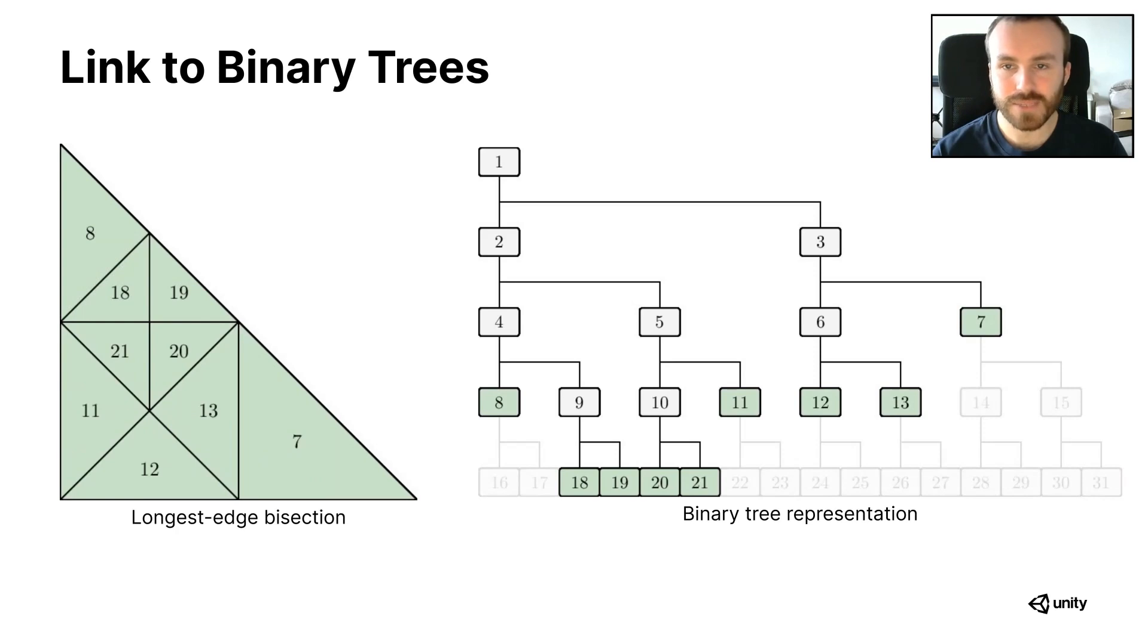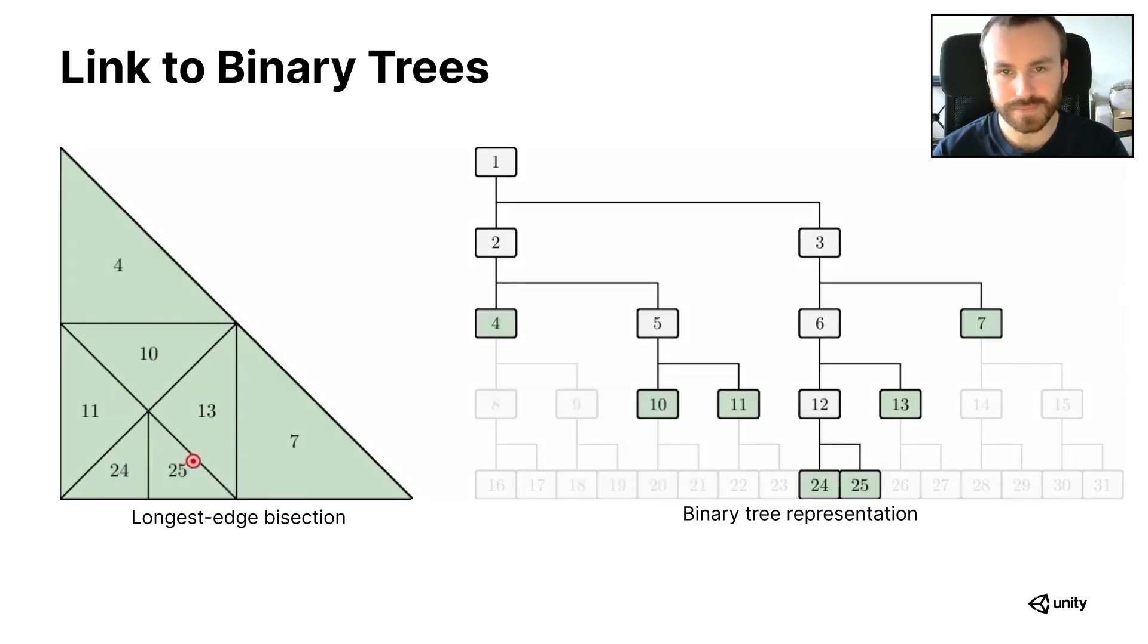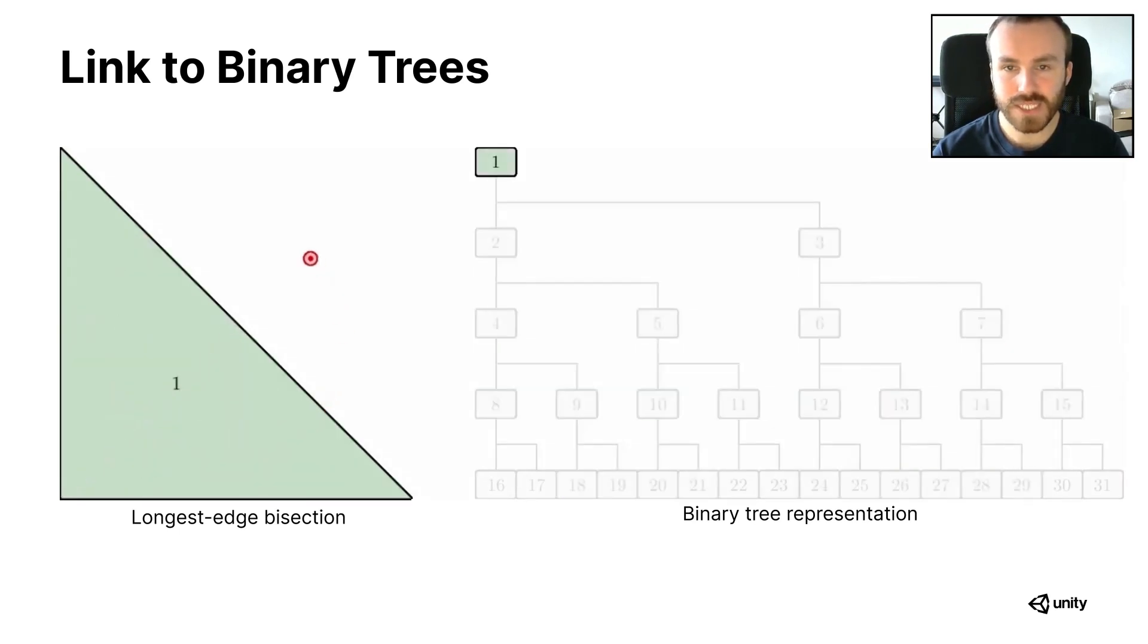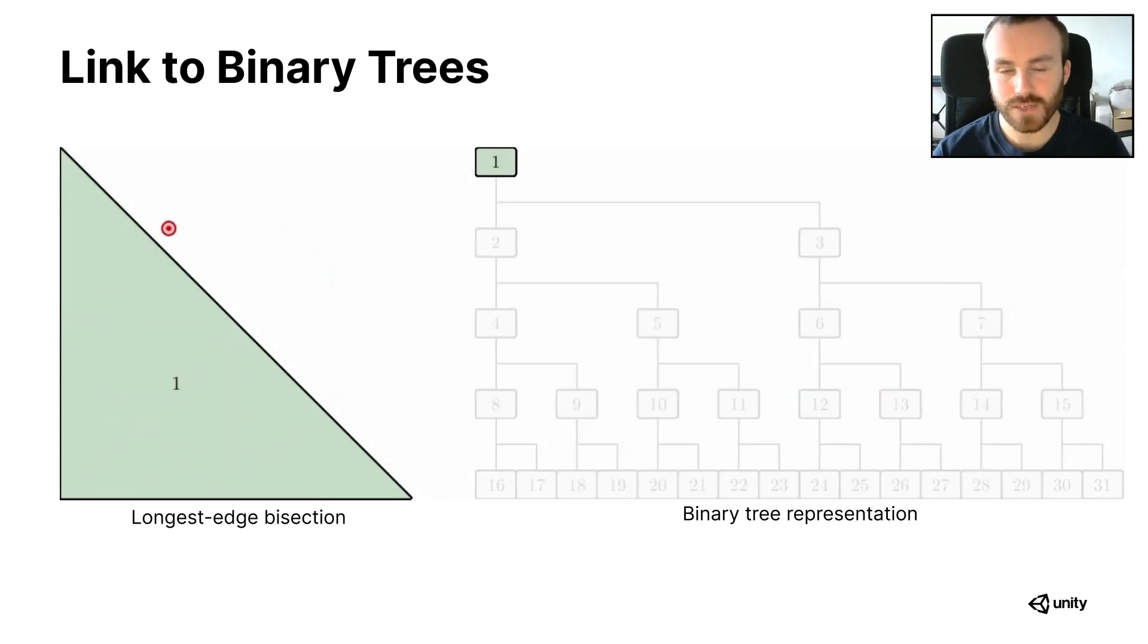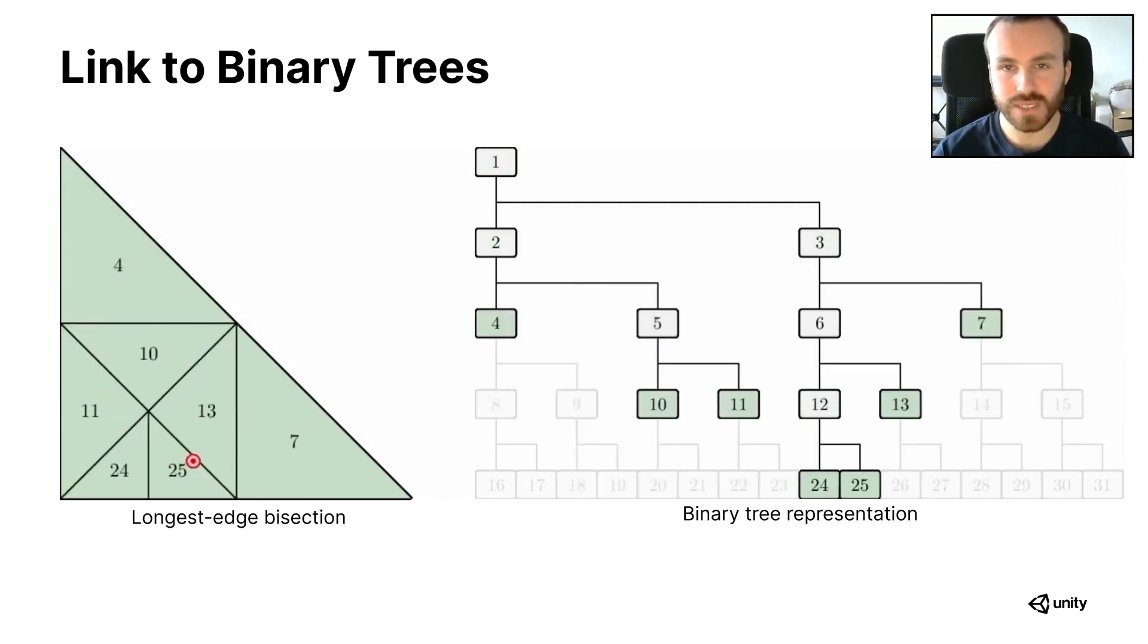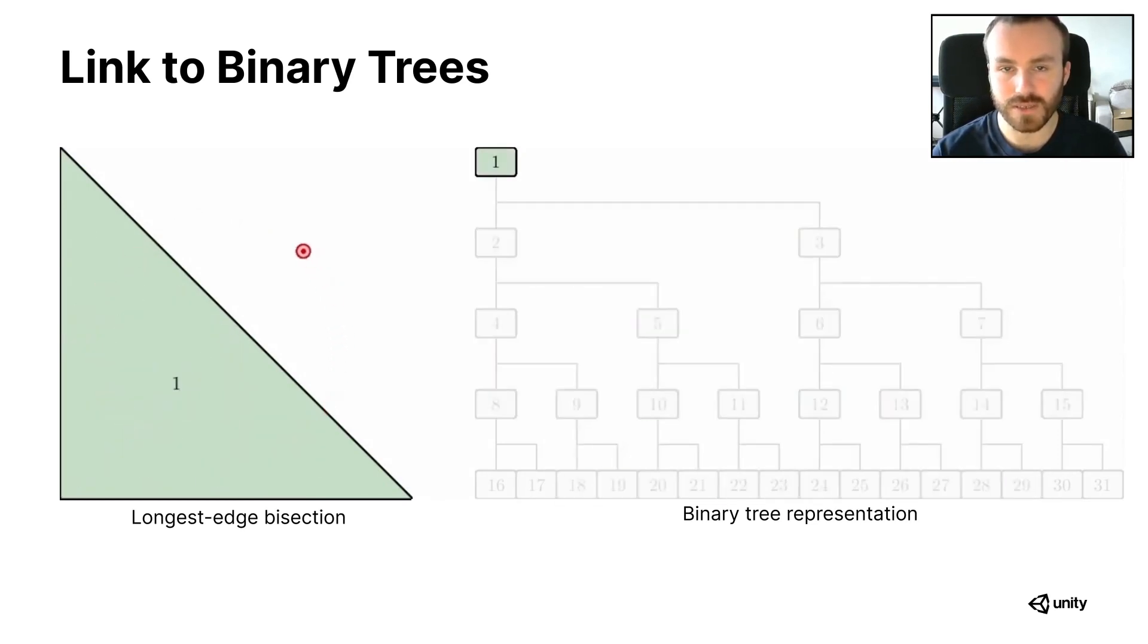This is also true in the case of an adaptive subdivision, where the smaller and bigger triangles on the left correspond to a binary tree with leaf nodes at varying depth on the right. Basically this means that any state of this subdivision scheme can be represented by a specific binary tree, and enumerating the leaf nodes of the binary tree means looping over the current triangles of the subdivision scheme.